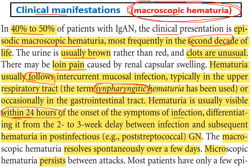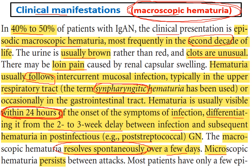The hematuria is usually visible within 24 hours of the onset of symptoms of the infection. This timing is important to differentiate IgA nephropathy from post-infectious or post-streptococcal glomerulonephritis, where there is a two-to-three-week delay between infection and hematuria. The macroscopic hematuria usually resolves spontaneously over a few days, but microscopic hematuria may persist between attacks.